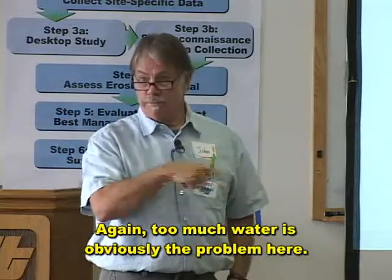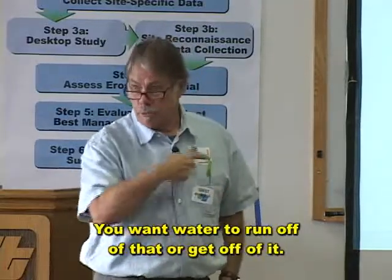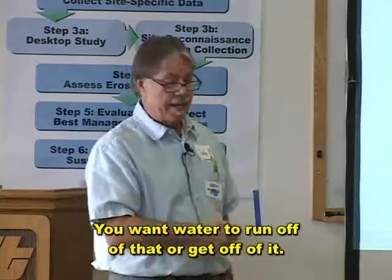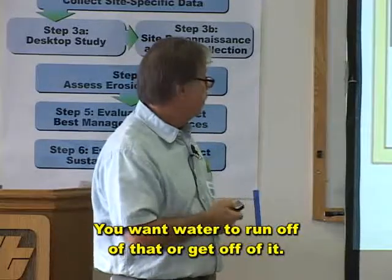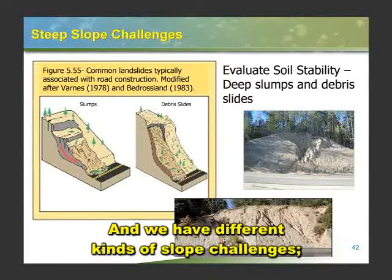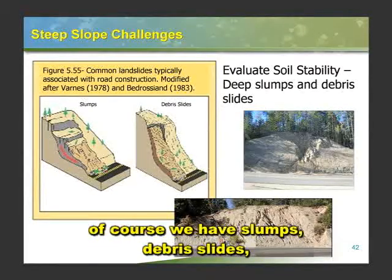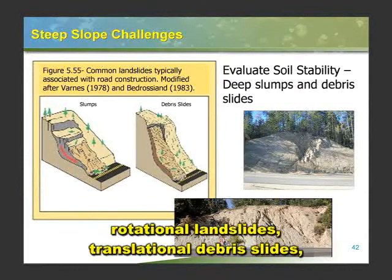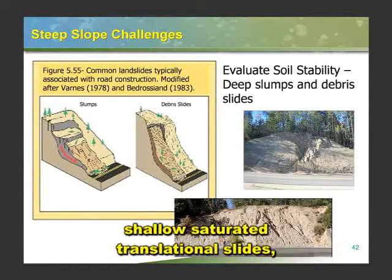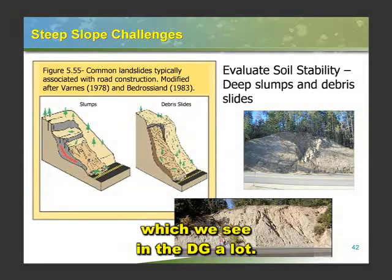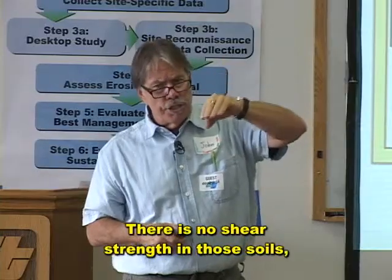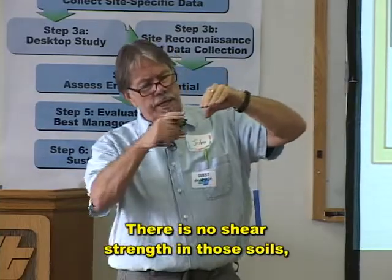Too much water is obviously the problem here — you want water to run off or get off of it. Now, we have different kinds of slope challenges: slumps, debris slides, rotational landslides, translational debris slides, shallow saturated translational slides, which we see in the DG a lot. There's no shear strength in those soils.